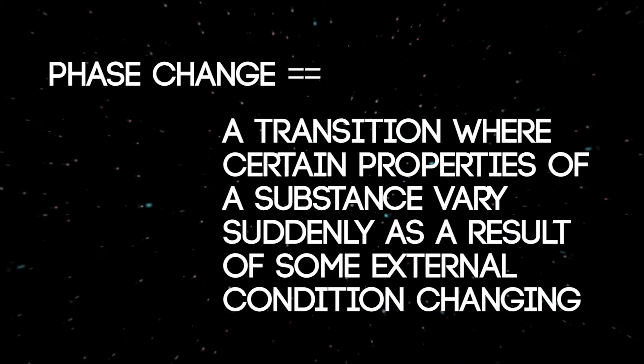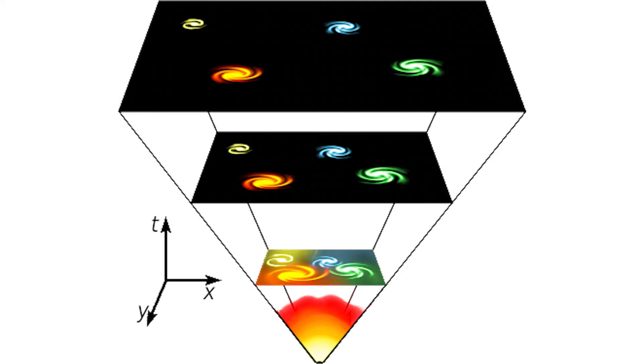There isn't always a visible manifestation. It is theorized that the laws of physics governing our universe change dramatically in a phase change that occurred during the very early portions of the Big Bang.